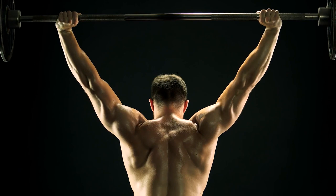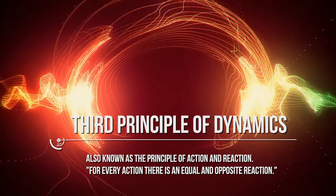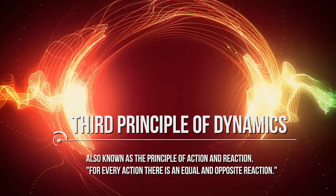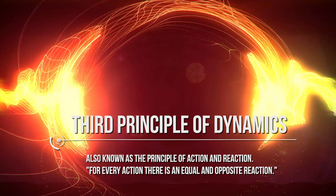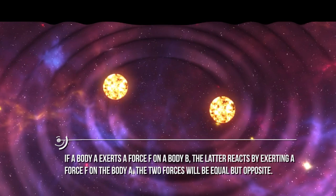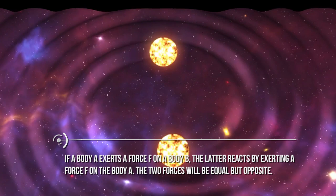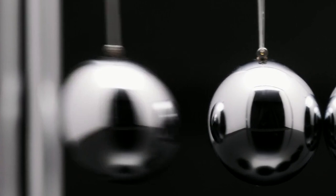Finally, let's talk about the third principle of dynamics, also known as the principle of action and reaction. It states that for every action there is an equal and opposite reaction. That is, if a body A exerts a force F on a body B, the latter reacts by exerting a force F on body A — the two forces being equal but opposite. The main conclusion is that forces can never be considered as isolated, but always act in pairs, and the interaction between two bodies is always mutual.